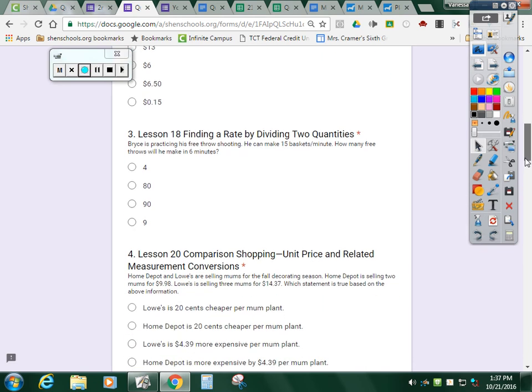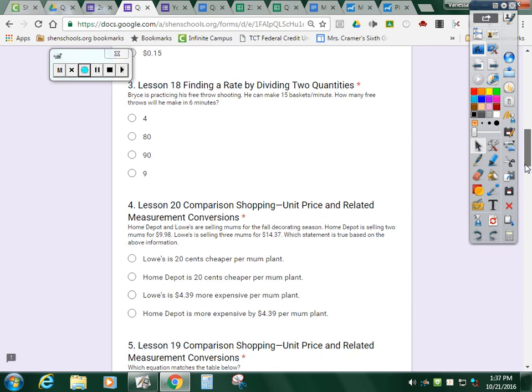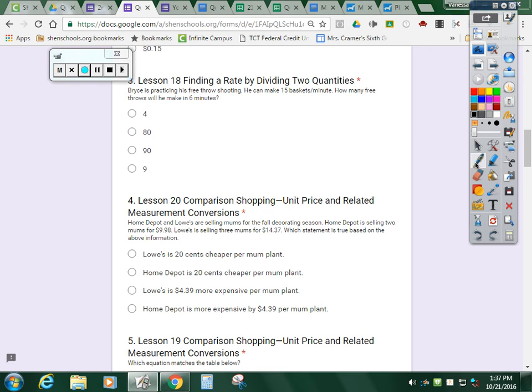Number three. Bryce is practicing his free throw shooting. He can make 15 baskets per minute. So I'm comparing baskets to minutes. 15 baskets per one minute. So I need to put 15 over one. How many free throws can he make in six minutes? So I'm going to do 1 times 6 is 6. 15 times 6 is 90. So he can make 90 baskets in six minutes.